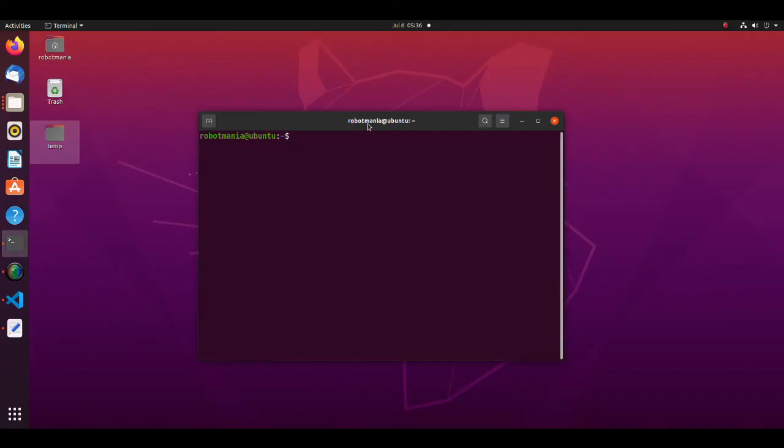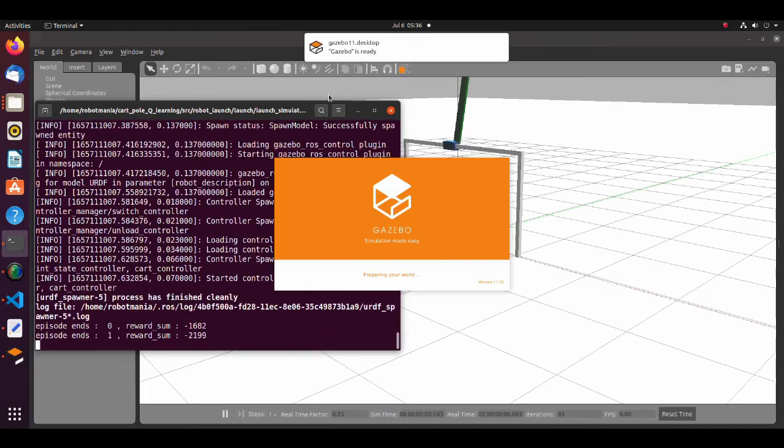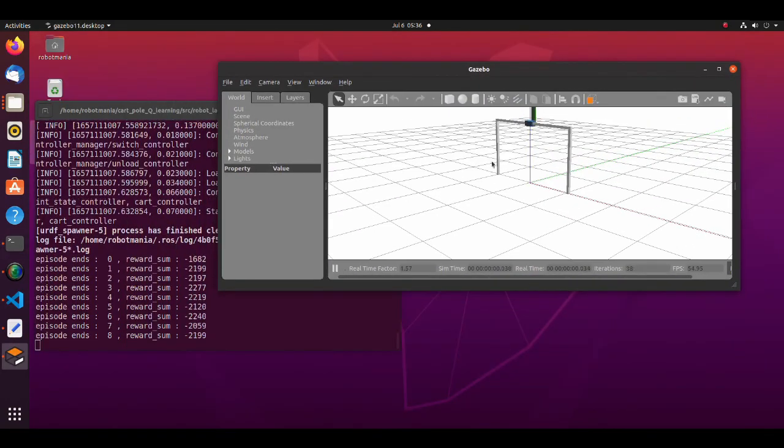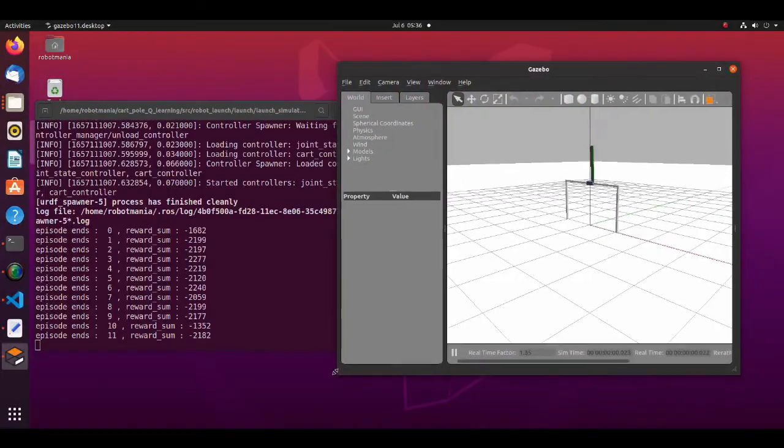Now let's do the simulation. To run the simulation, download the cart-pole q-learning zip file from the google drive and execute the launch simulation file. In this simulation, the epsilon greedy algorithm is used.